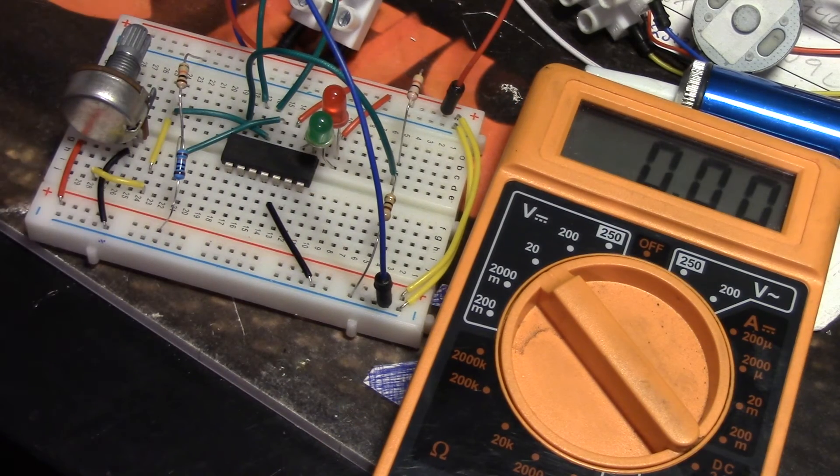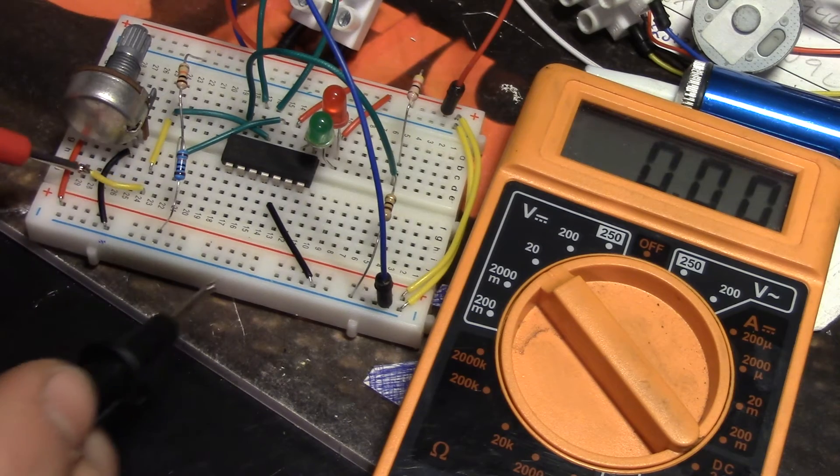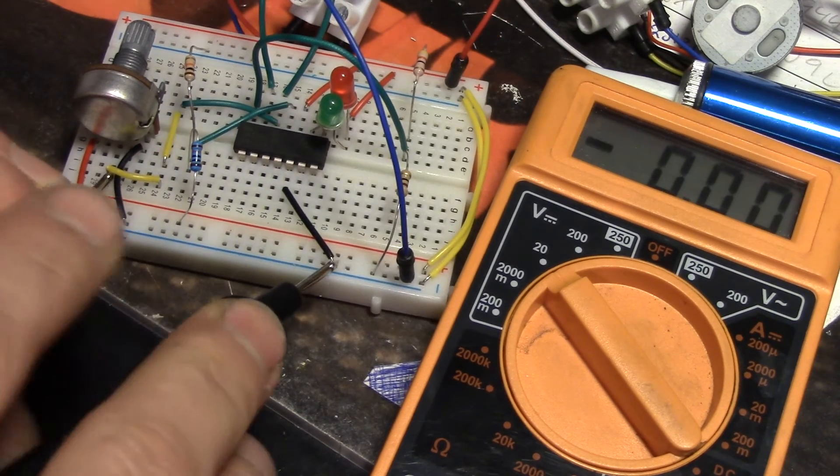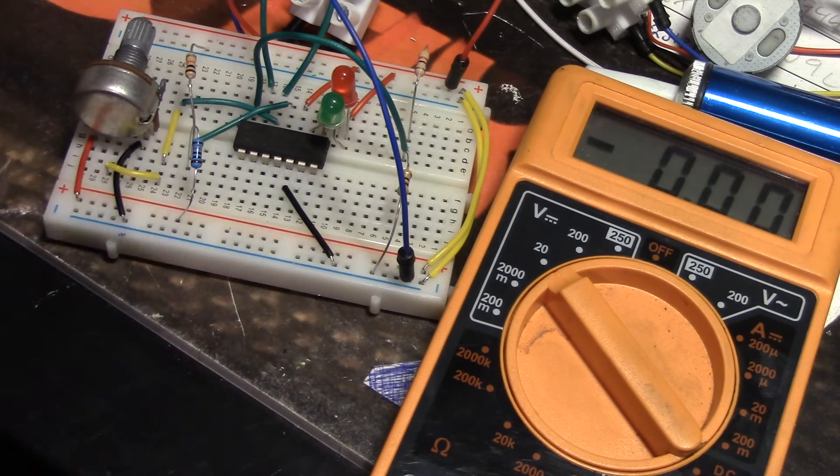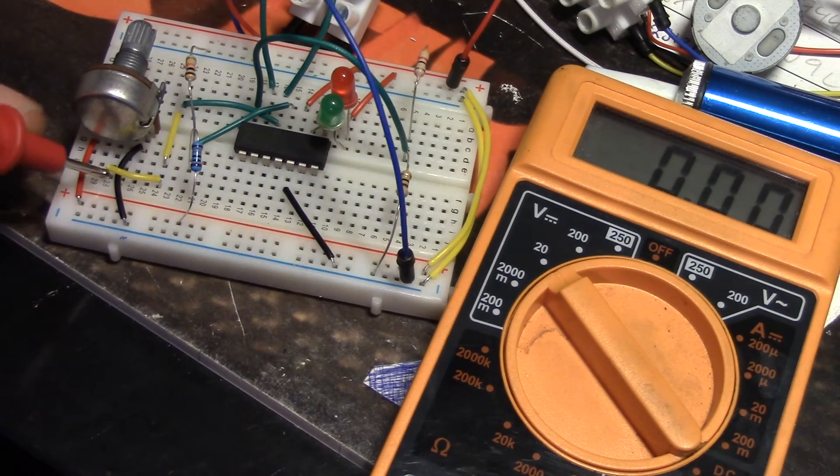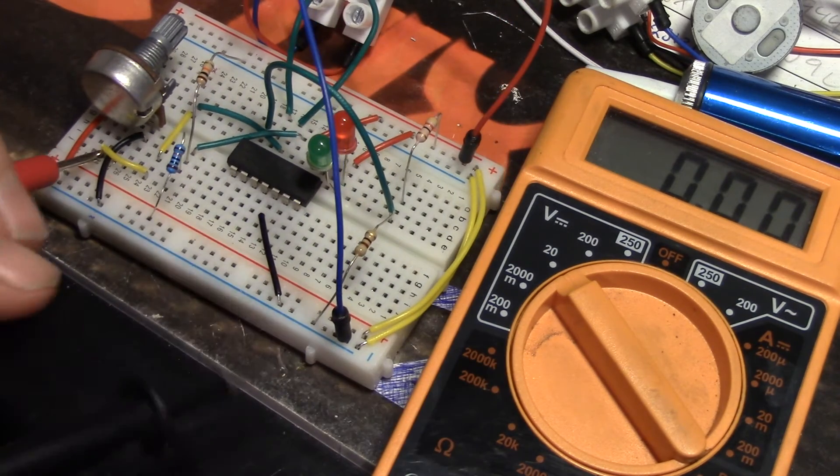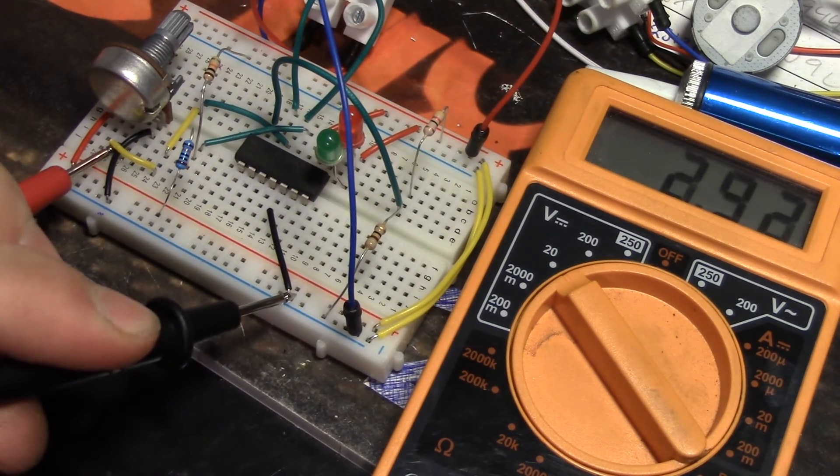So I put on my multimeter, and I will connect these leads to the output, the center pin of the potentiometer, that has a 0 to 5 volts output, and ground pin here.